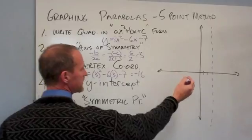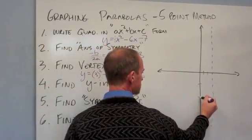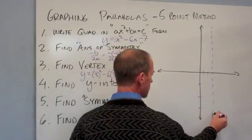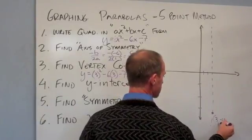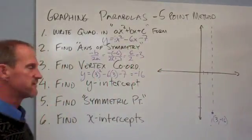So I'm way down here at negative 5, 10, 15. Right there is my vertex. And label that 3 comma negative 16. Okay? So that's the first of our five points.